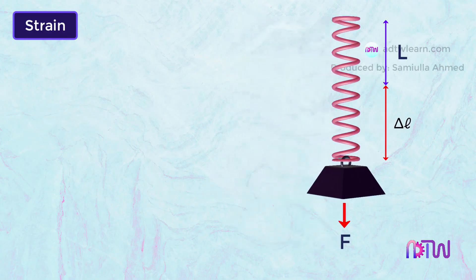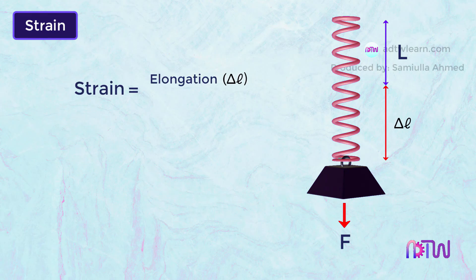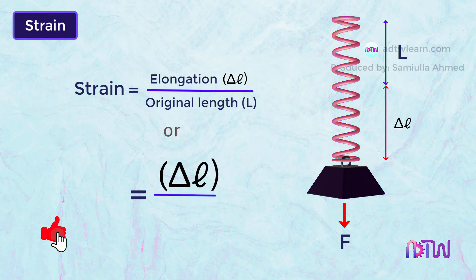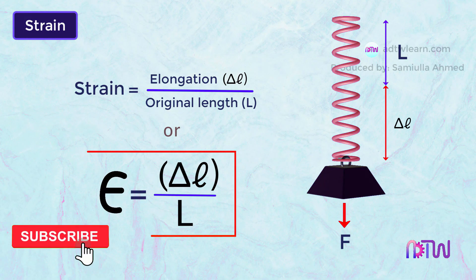The strain underwent by this spring is given by this equation. That is, strain equals the elongation of the spring due to the application of force F divided by the original length of the spring. We can also say, strain is the ratio of change in length to the original length, and it is denoted by epsilon.